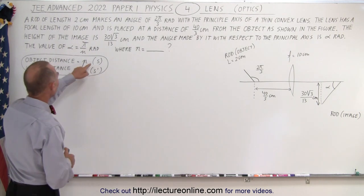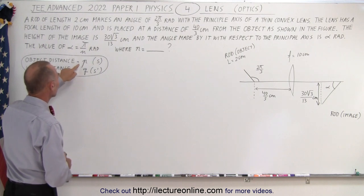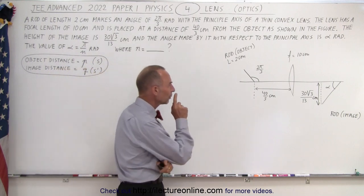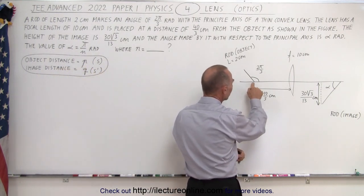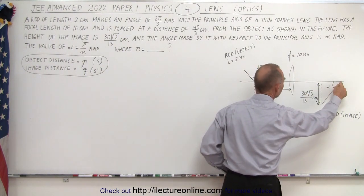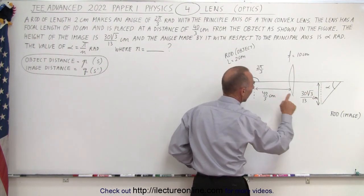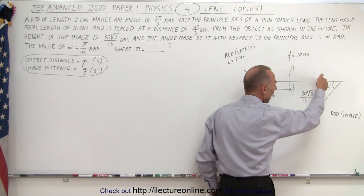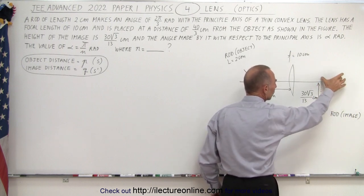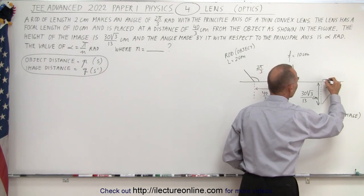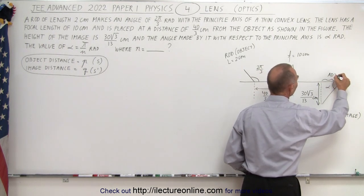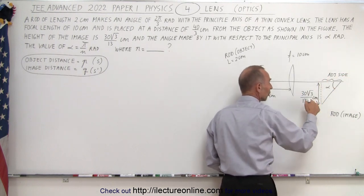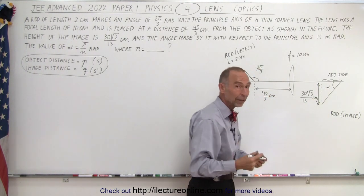I use s for object distance and s prime for image distance — some people use p and q. Notice that one point of the object has an image here, and another point of the object has an image here. We want to find the angle, and we know the opposite side of this triangle, so we need to find the adjacent side. Once we have the adjacent side and the opposite side, we can find the angle using the inverse tangent.